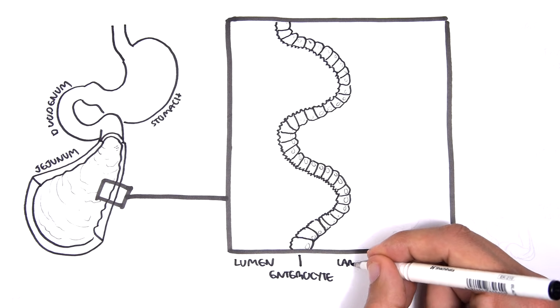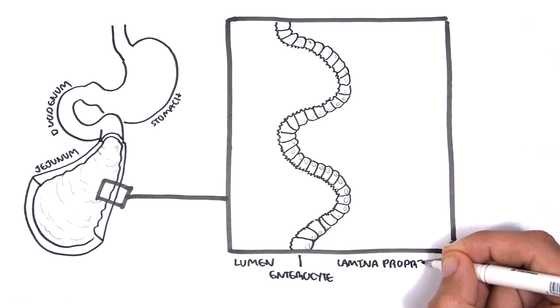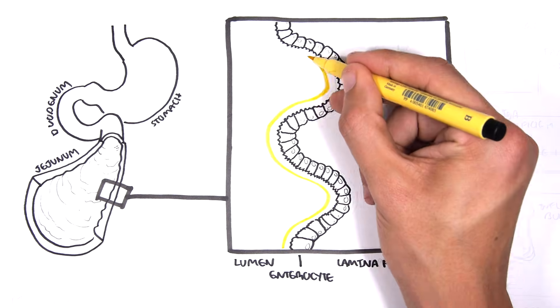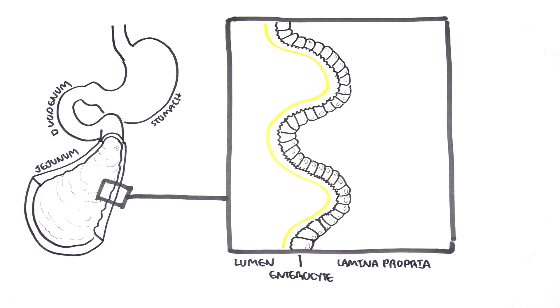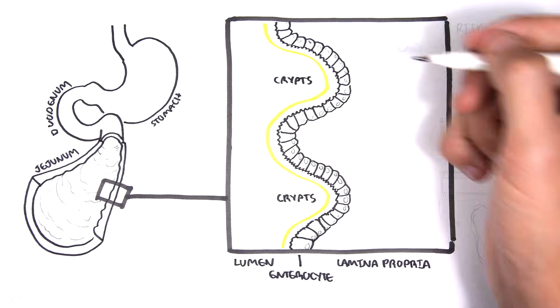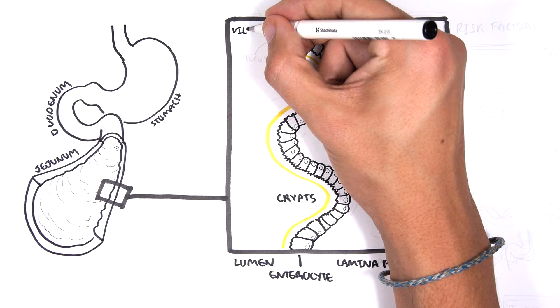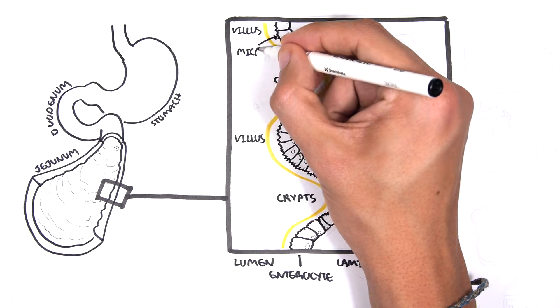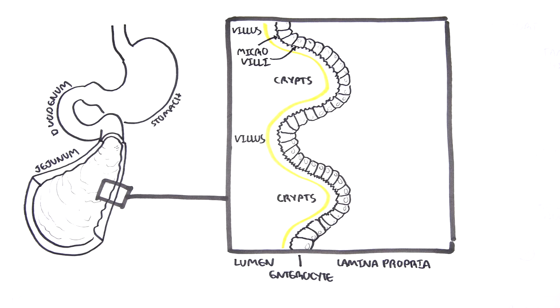The jejunum is made up of enterocytes and below these enterocytes is the lamina propria, which contains other types of cells. On top of the enterocytes here in yellow is the mucus. The small intestine forms crypts and villi. The enterocytes also have microvilli, which are essentially small finger-like projections that increase the surface area to increase absorption.